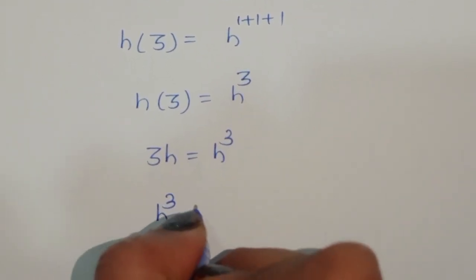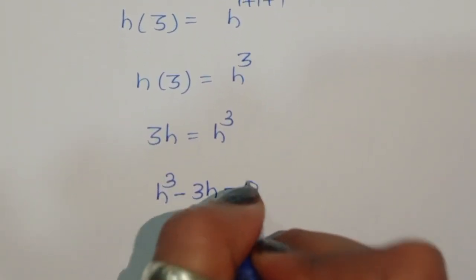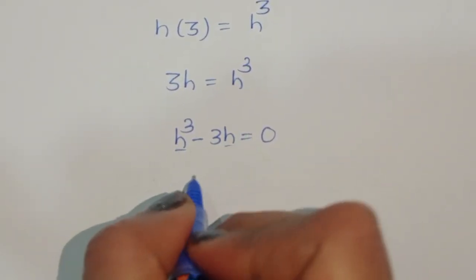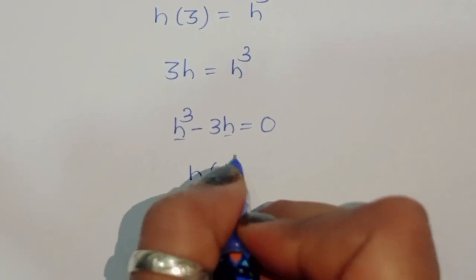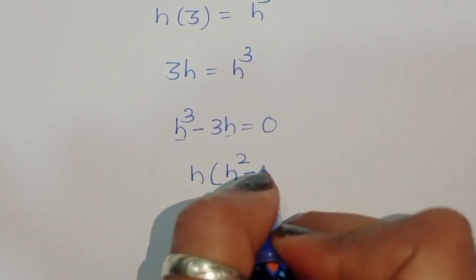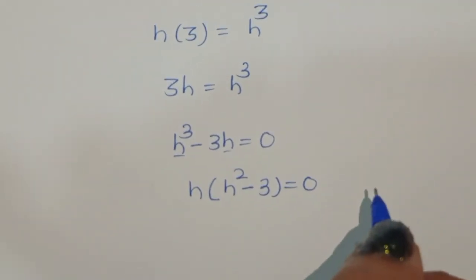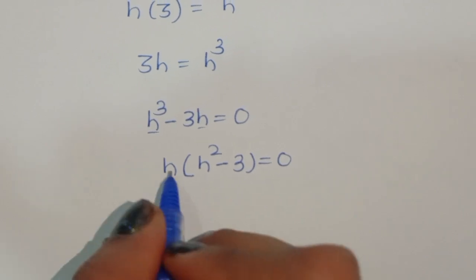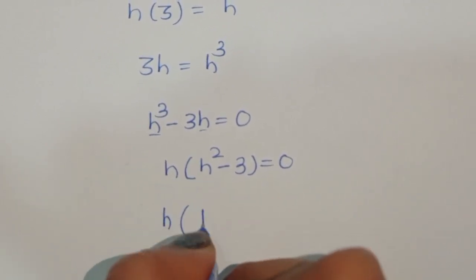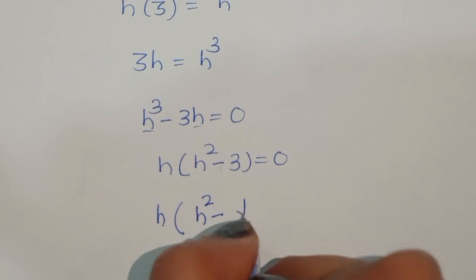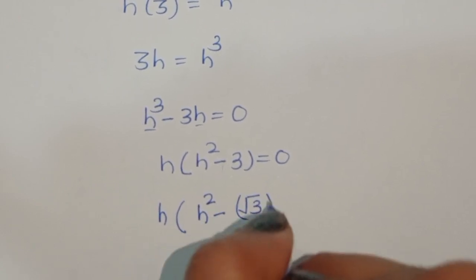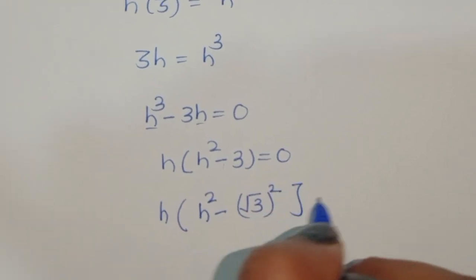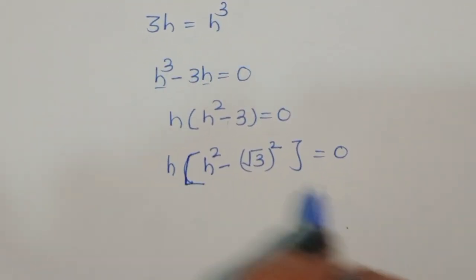We can rewrite this as h cubed minus 3h equals 0. Taking h as a common factor gives h times (h squared minus 3) equals 0. We can rewrite h squared minus 3 as h squared minus (square root of 3) squared.